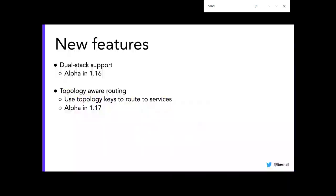I wanted to mention very recent features of kubeproxy. The first is dual-stack support — Kubernetes supports IPv4 and IPv6 in alpha since 1.16, and kubeproxy supports it too. The most recent feature is topology-aware routing, which allows you to connect preferentially to local pods — local meaning on the same node, or in the same zone or data center — and otherwise load-balance to all pods. This is still in alpha but pretty promising.